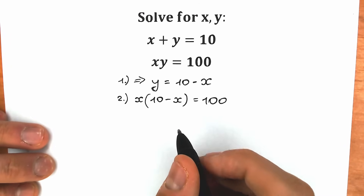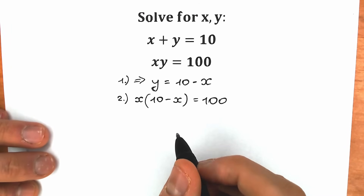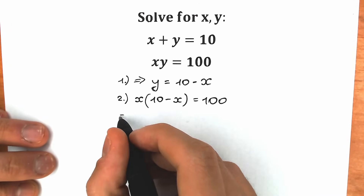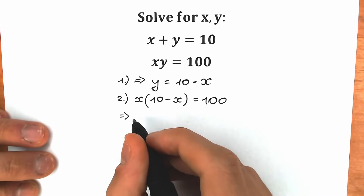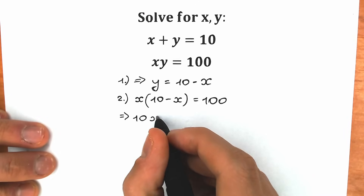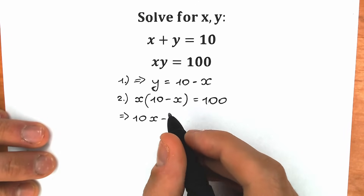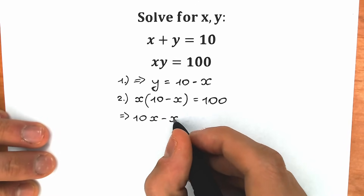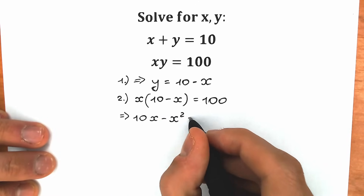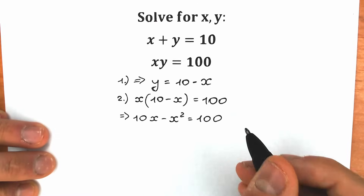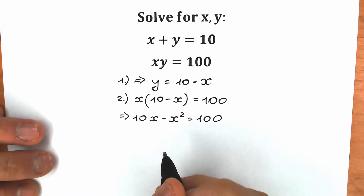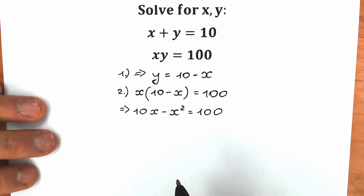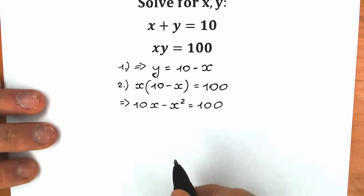Let's simplify. This looks like a quadratic equation. We have 10x minus x squared equals 100. Now let's rearrange the order — we prefer the x squared term first.